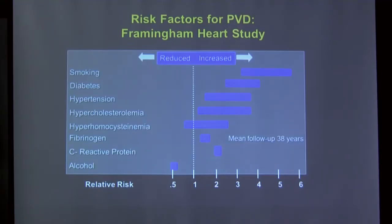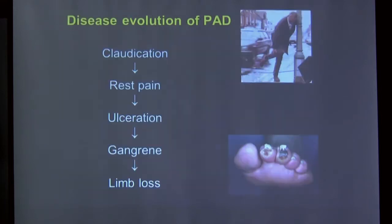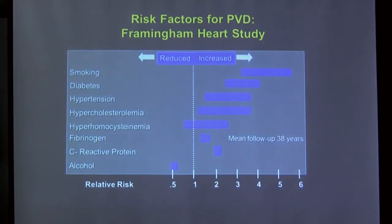The Framingham Heart Study followed patients in Framingham, Massachusetts for 30 to 40 years and quantified PAD risk factors. Smoking conferred about a five-fold increased risk compared to non-smokers. Diabetes, high blood pressure, and high cholesterol also significantly increased risk. Elevated homocysteine blood levels were another risk factor, and interestingly, moderate alcohol consumption showed a modest protective effect.